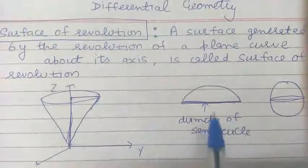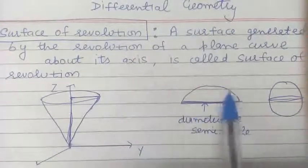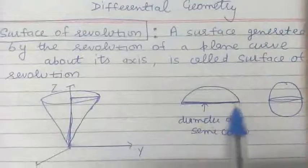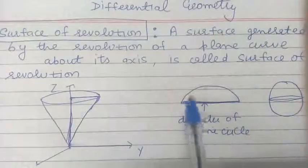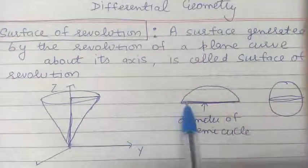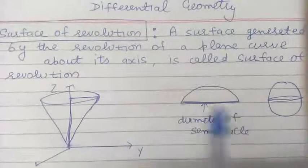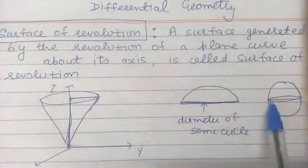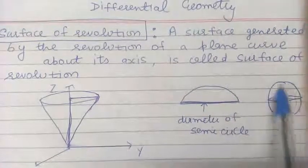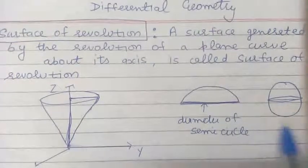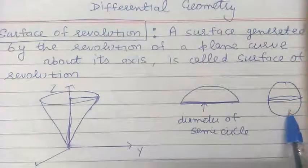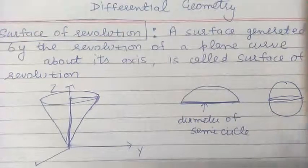Another example: if we take a semicircle, let us take this is the diameter of the circle. If we rotate this plane curve about this diameter, then the surface of revolution — you can see when this is rotated — we get this sphere. So, the surface of revolution in this case is a sphere.